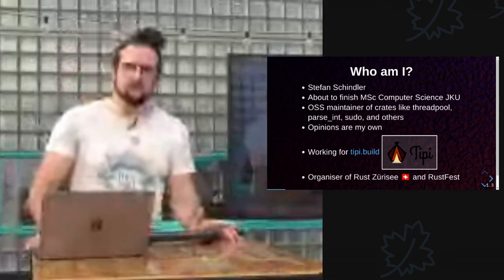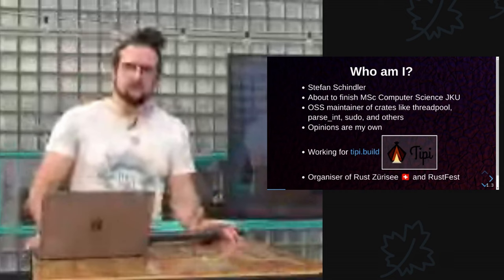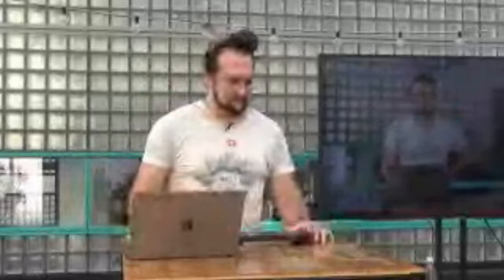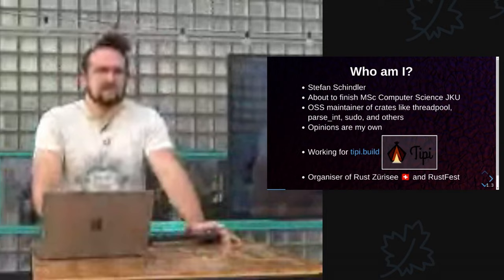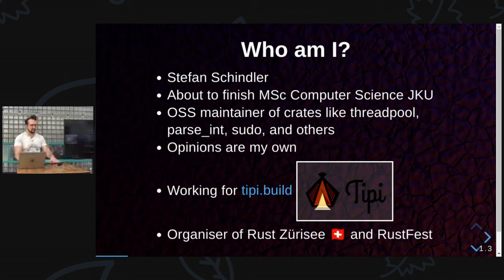You can follow my blog. I'm here in Linz to finish my master's degree. It should be done soon-ish — end of the year, definitely, probably end of the month. I maintain a couple of open source crates. On the Rust side, you may have seen fretpool, parseint, or sudo. I can highly recommend parseint because it just deals with all the prefixes.